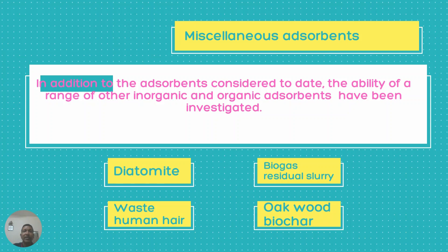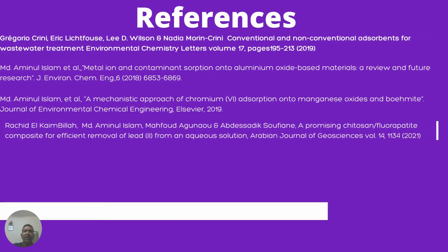Then come miscellaneous adsorbents. In addition to the adsorbents considered to date, a range of other inorganic and organic adsorbents and composites have been used — for example, diatomite, coke, wood, and biochar. In addition, researchers are now using mixed matrix or mixed oxide adsorbents or nanomaterials for wastewater treatment.